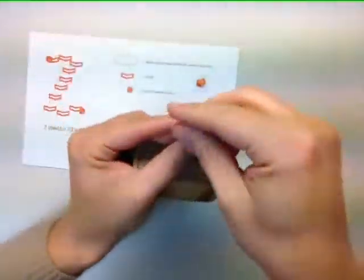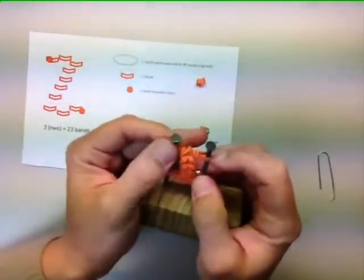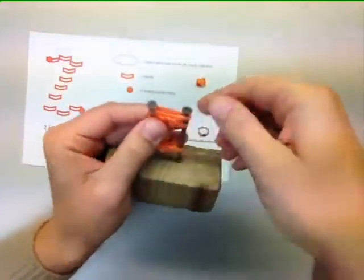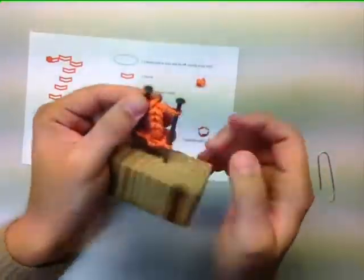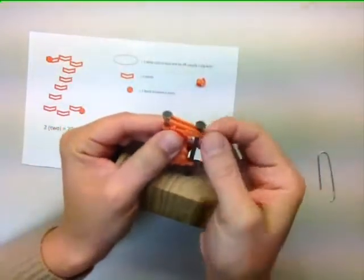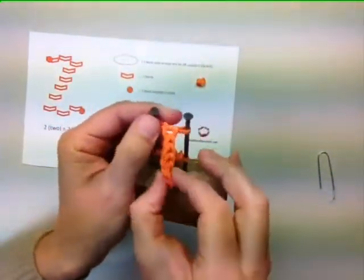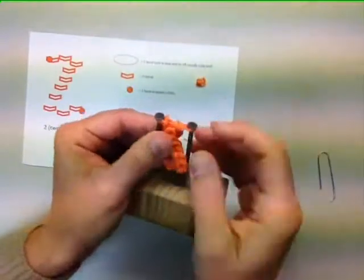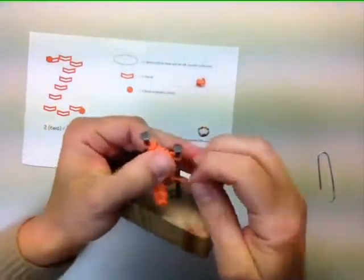And then we're going to add the top part of the number two onto one nail and add one more band to close off the charm. So let's close the pieces together with one band and tie it off with a slip knot.